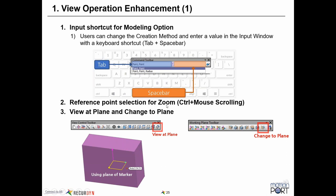Another enhancement that's been requested by many users for some time: on a lot of CAD systems, when you zoomed you could pick a reference point and it would zoom toward that point. Now, if you hit the Control key and use the mouse wheel, you're able to select that reference point. This is a pretty welcome upgrade.